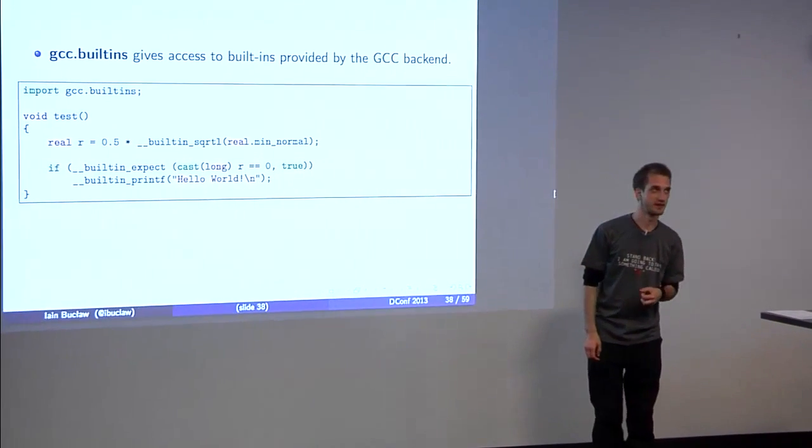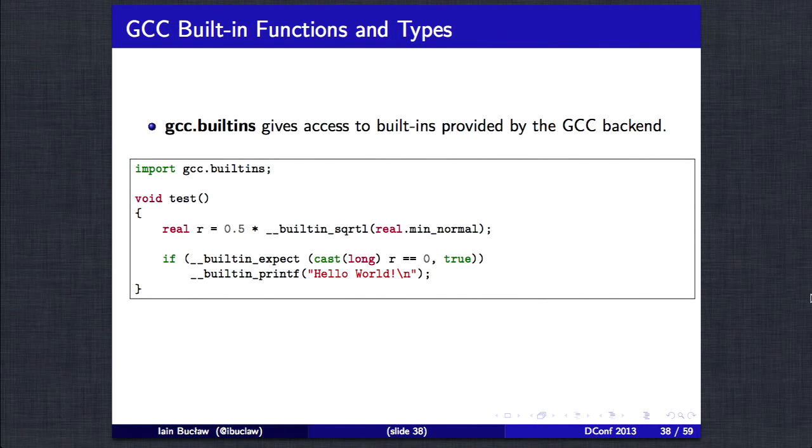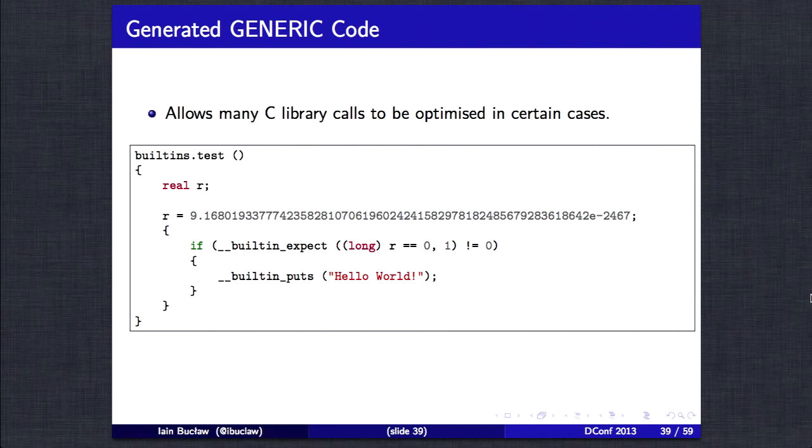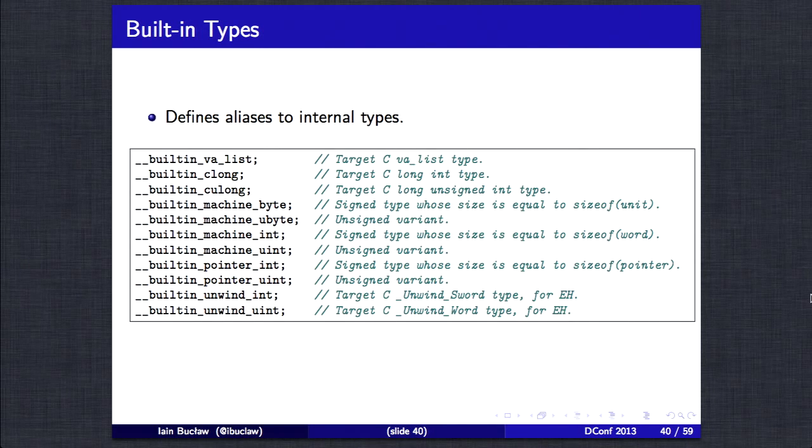We also have a module called gcc.builtins. This gives access to builtins provided by the GCC backend. Roughly speaking, how it works is, there's about 800 functions defined within GCC, and we try to convert it to a representation that the D frontend can handle. If we're able to do this, we then squirt it out into the module. The benefit of things like this is the fact that GCC knows what these functions are, and so can optimize it in particular ways. As you can see here, it's the representation when it's turned into Gimple. The square root is actually expanded completely, and you've got this ridiculously large number.